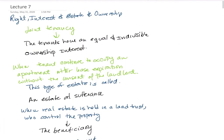In this lecture we're going to talk about rights, interest, and real estate ownership. Let's start with joint tenancy. A joint tenancy is where tenants have an equal and indivisible ownership interest, so both are responsible for the same thing — like 50/50.